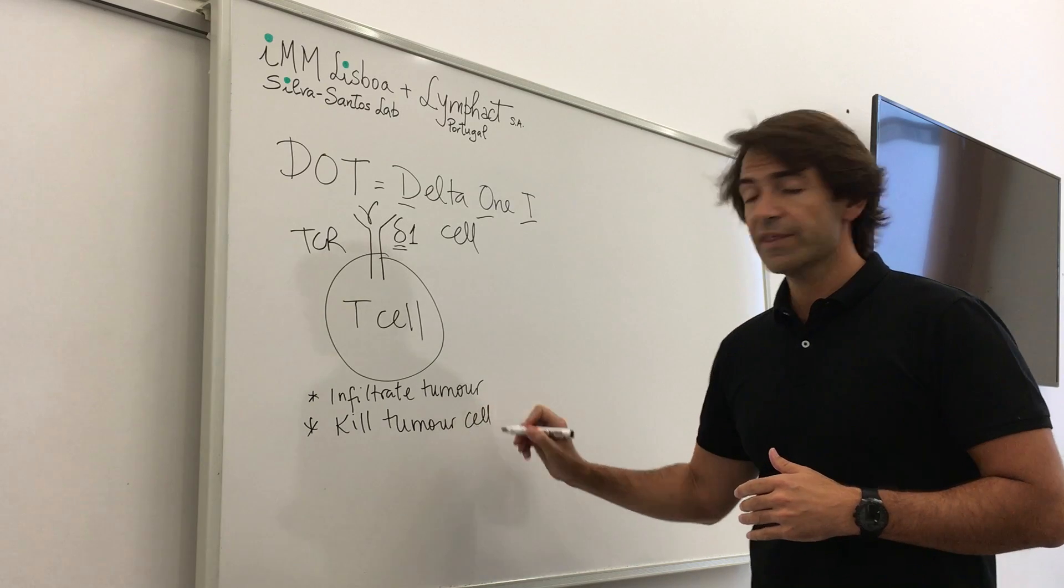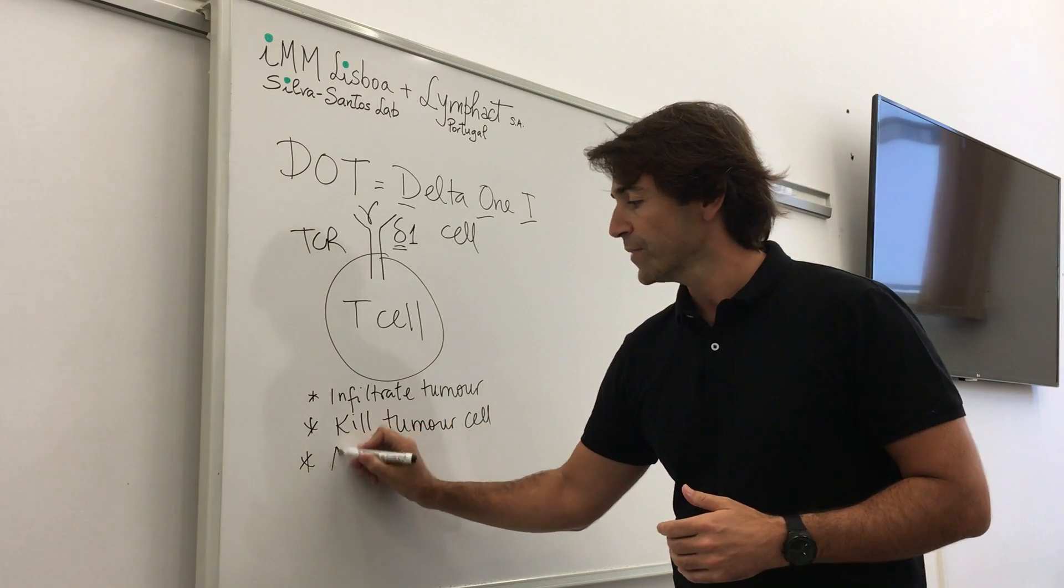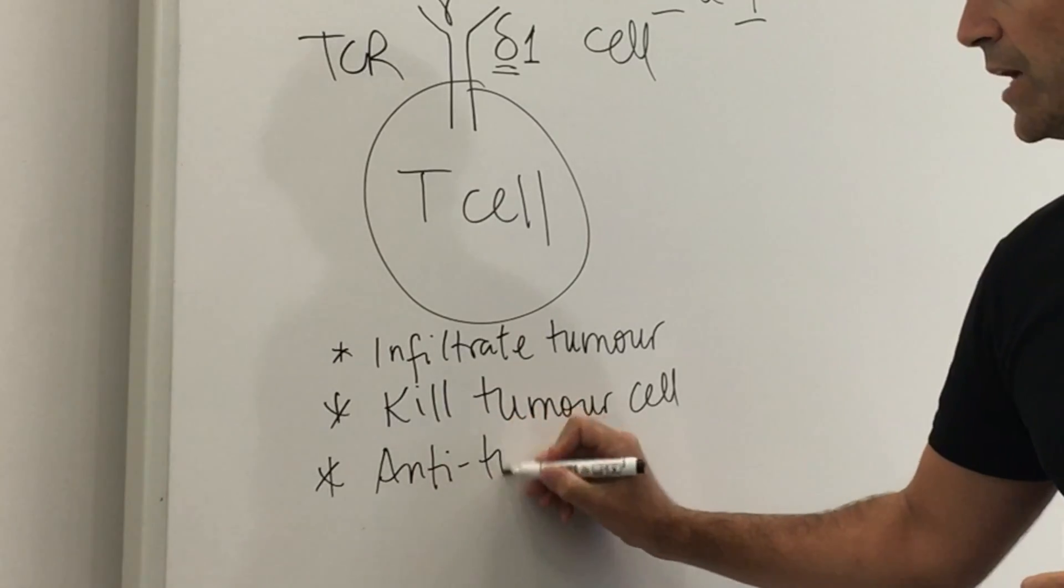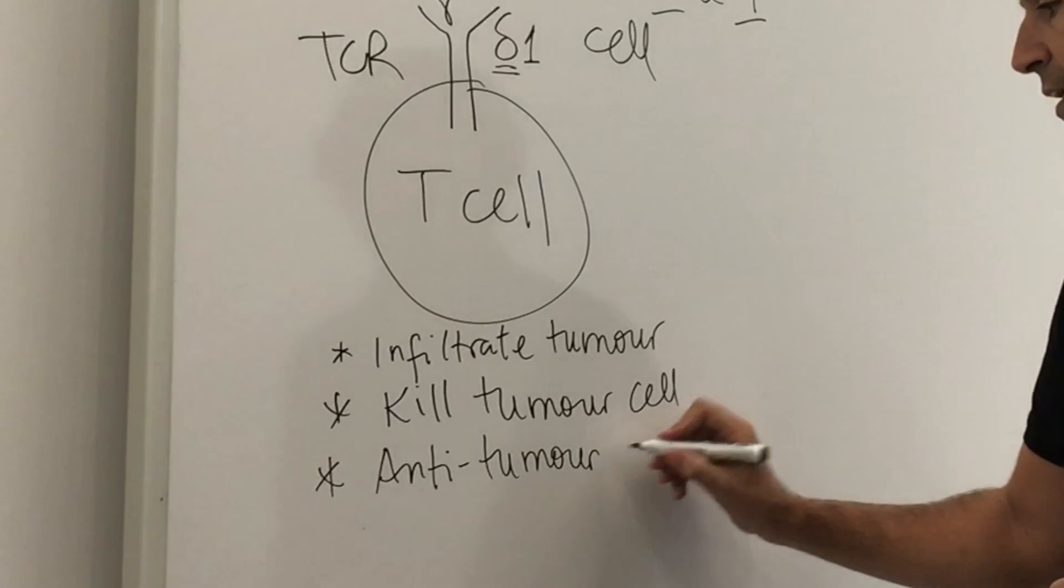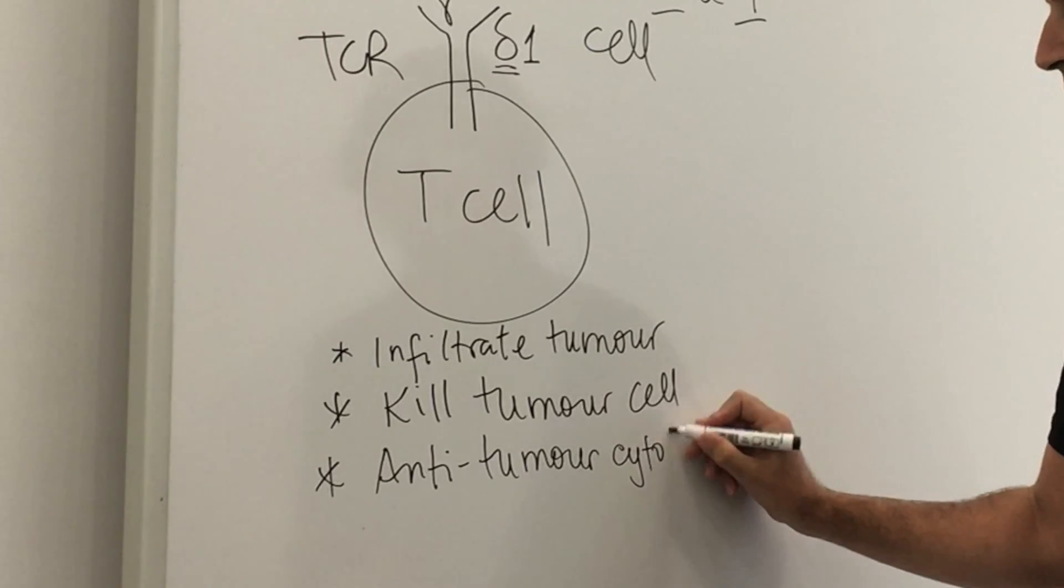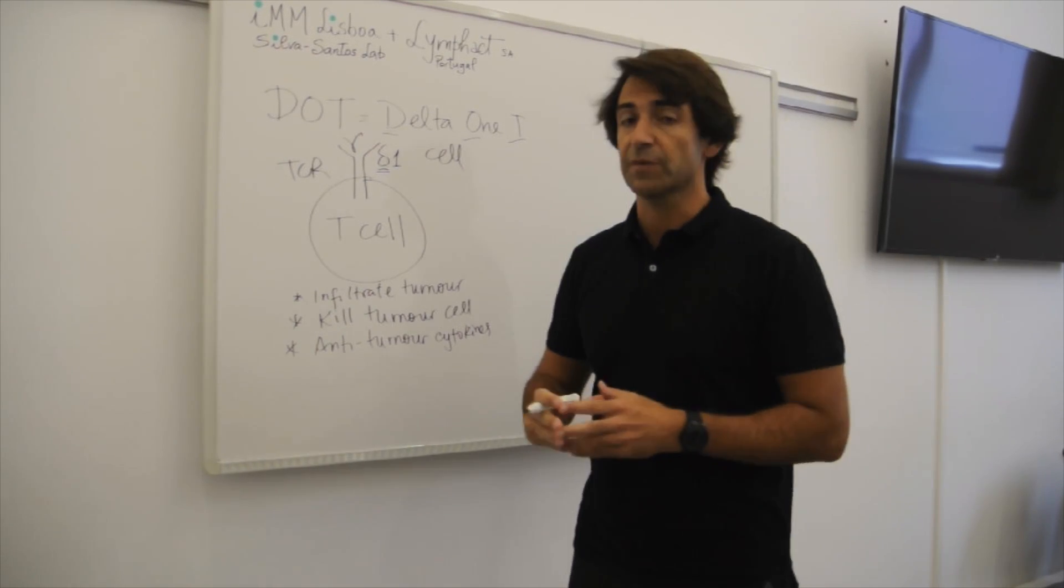And also they produce anti-tumor cytokines, so anti-tumor molecules such as interferon gamma and TNF-alpha, tumor necrosis factor. So these three properties of DOT cells, of Delta 1 T cells we think are very interesting.